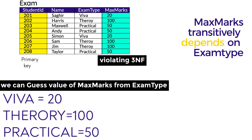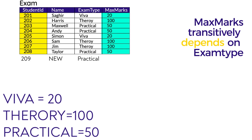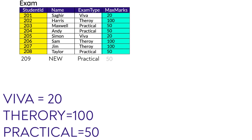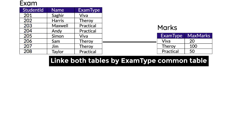If student ID 209 opts for a practical exam, we already know the maximum marks will be 50. This is a classic case of violating Third Normal Form. We break the maximum marks column and put it in another table. Now there is no transitive dependency between the tables. Transitive dependency can be a bit tricky, so we'll see another example.